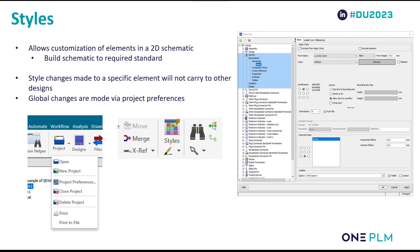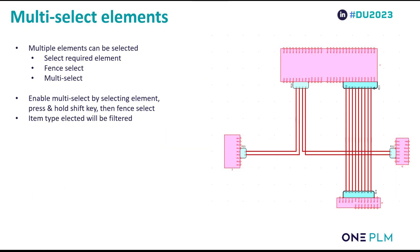It's worth noting that editing styles within the schematic will only be done for that individual component in that single design. If you want to make a global change to your schematic, that has to be done via the Project Preferences, accessed by going into the Solid Edge tab and selecting the Project dropdown. The options are nearly the same as in Styles, but with a few more options in Project Preferences, and changes will be saved to the global settings — meaning when you make a change, it'll be reflected in all designs going forward.